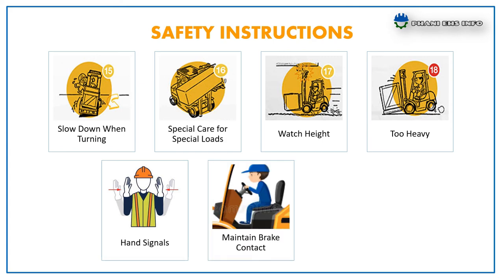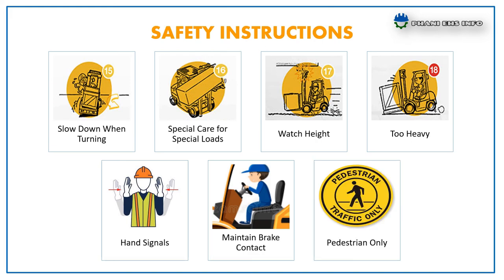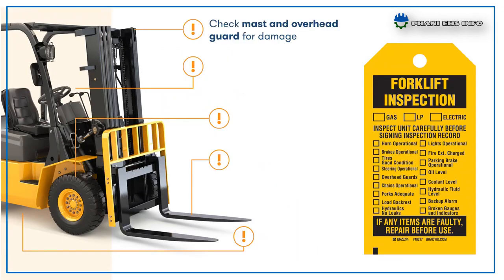Hand signals — the operator shall allow safe clearance and use stop and go-ahead hand signals. Maintain brake contact — the operator shall maintain contact with the brake pedal of the forklift. Pedestrian-only zones — the operator shall not operate any forklift or other mobile equipment in a designated pedestrian area.